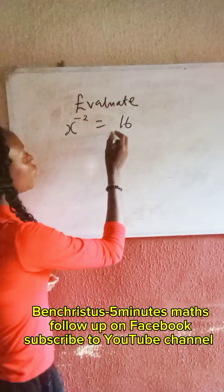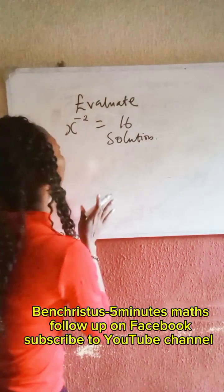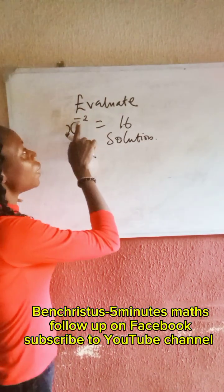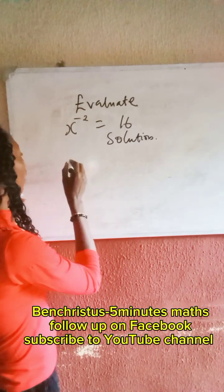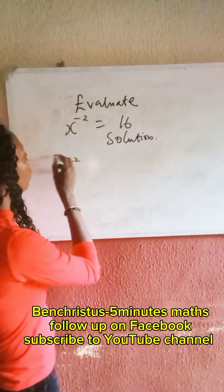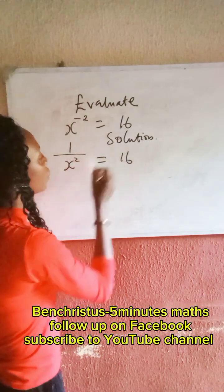Let's solution to the problem. Now, whenever you see something like this, it means it should be 1 all over that. So we have x to the power of 2, 1 all over x to the power of 2 equal to 16.